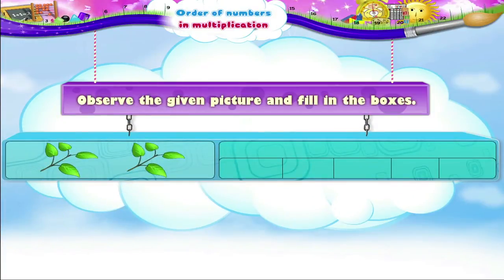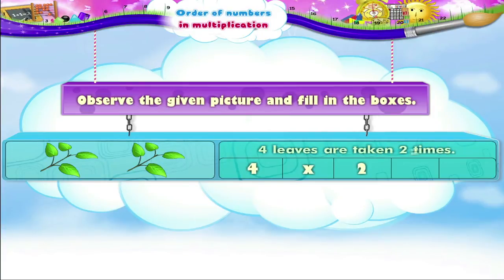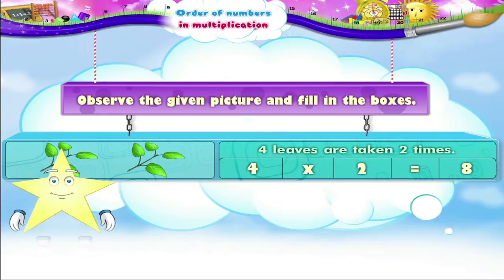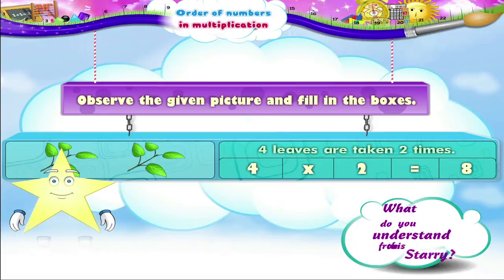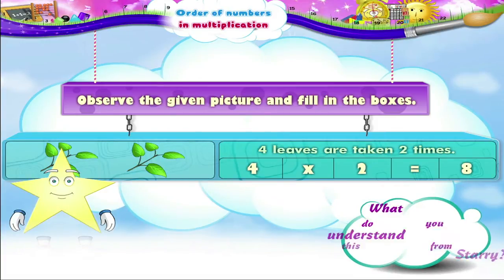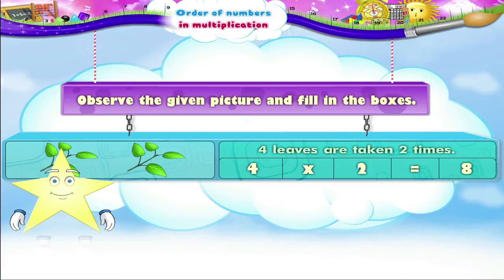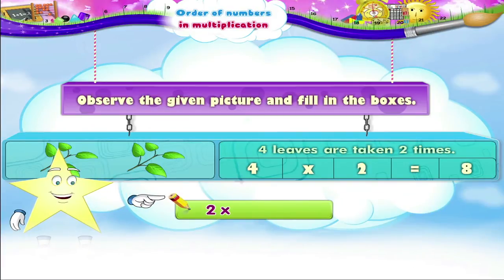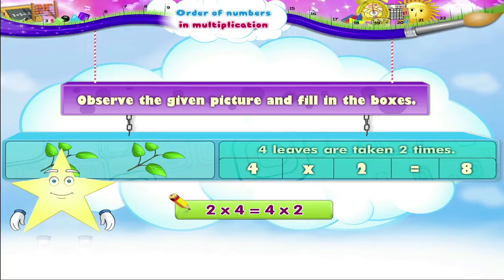In the next picture, four leaves are taken two times. So four into two is equal to eight. We understand that two multiplied by four is equal to four multiplied by two.